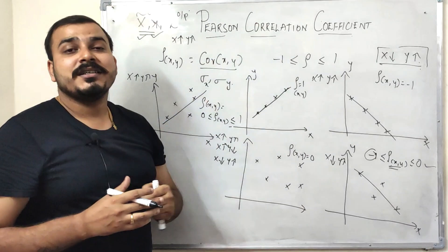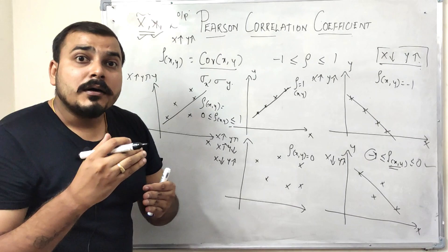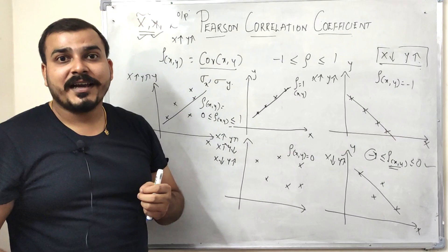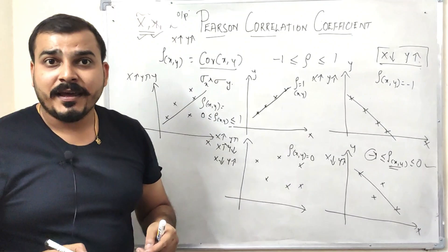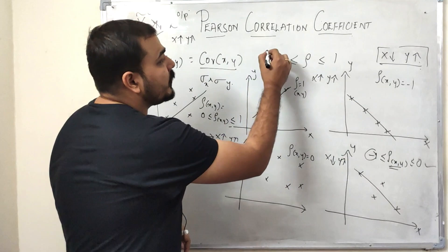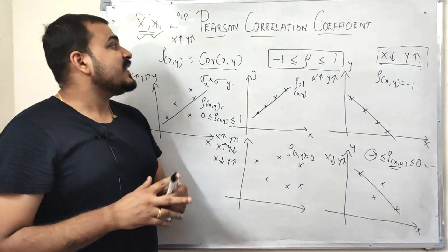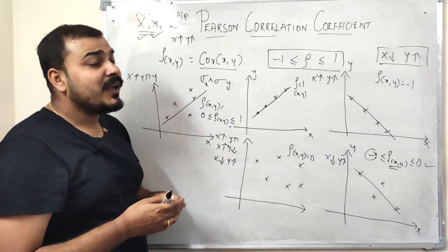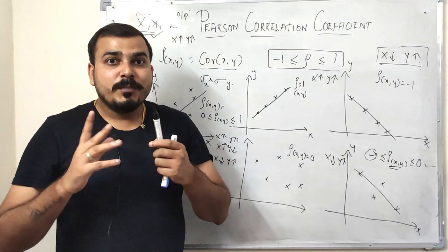The disadvantage of covariance is that we cannot measure the strength of the direction. With Pearson correlation coefficient, since we divide by the standard deviation of X and Y, we can measure the strength, which always ranges between minus 1 and plus 1. In my next video I'll discuss Spearman rank correlation coefficient, which addresses some disadvantages of Pearson. Please share this video, subscribe, and I'll see you in the next one.